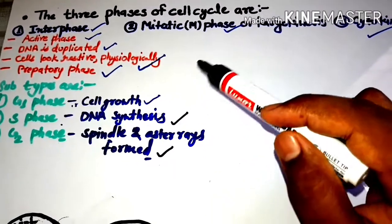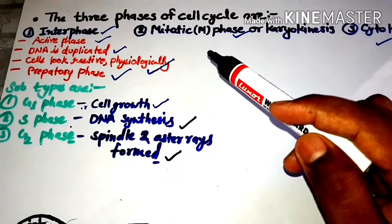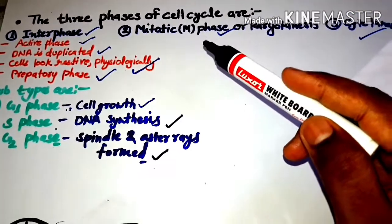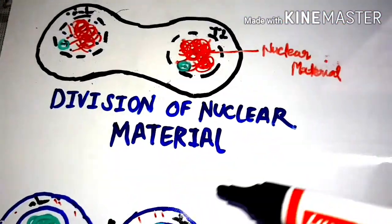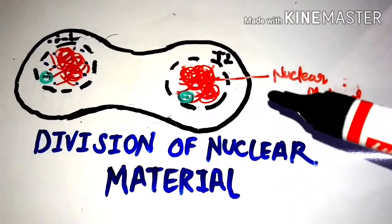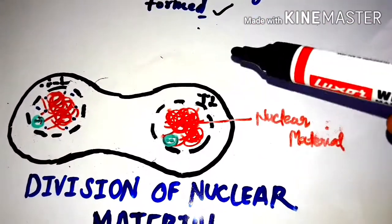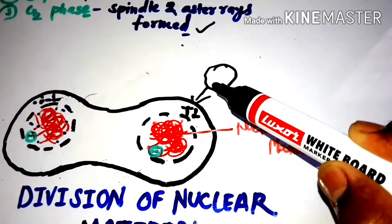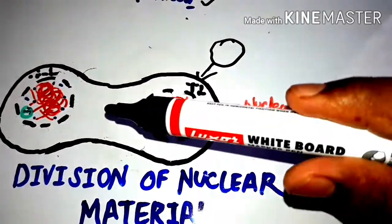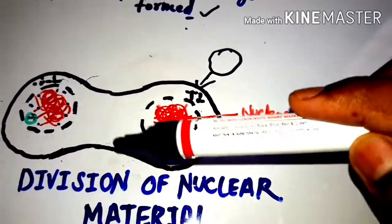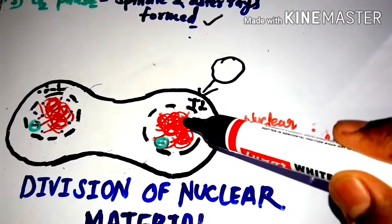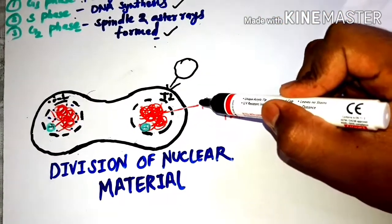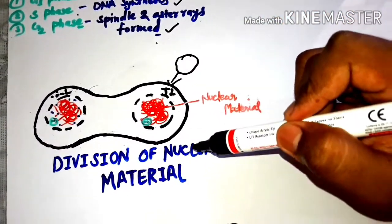In mitotic phase or karyokinesis, division of nuclear material takes place. Like you see here, division of nuclear material - this is one cell before, and when the nuclear material is divided, the constriction furrow is appearing slowly.